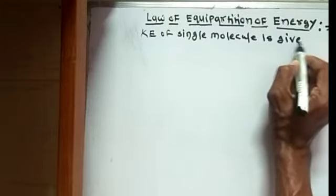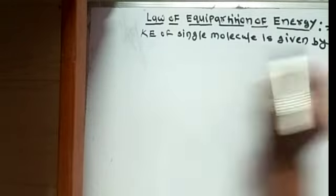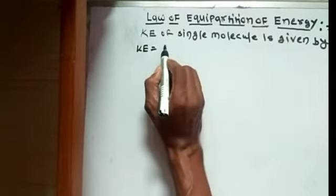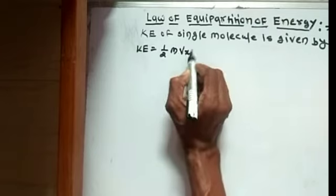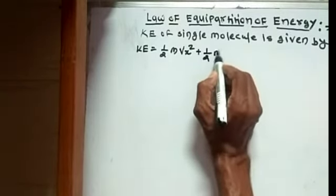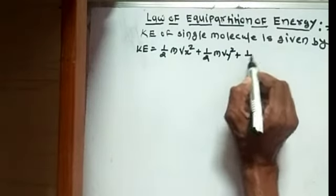Kinetic energy is equal to half m vx square plus half m vy square plus half m vz square.